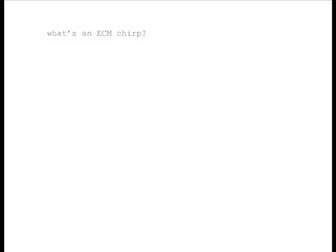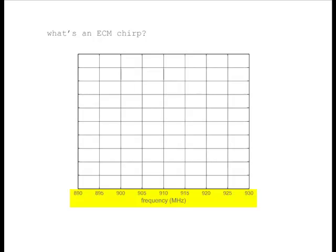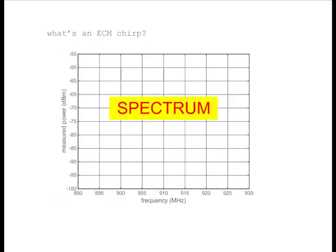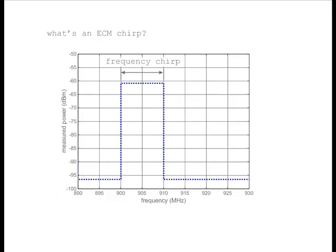What is an ECM chirp? We start by drawing a graph where the horizontal axis is frequency and the vertical axis is signal power. This is called a spectrum. An ECM chirp consists of energy radiated across a particular span of frequencies. In this case, I'm showing one which is flat on top, having equal power at all frequencies.